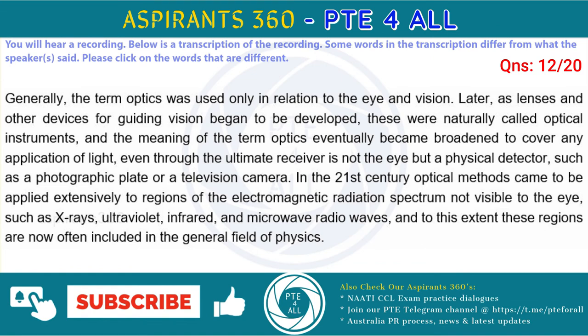Originally, the term optics was used only in relation to the eye and vision. Later, as lenses and other devices for aiding vision began to be developed, these were naturally called optical instruments, and the meaning of the term optics eventually became broadened to cover any application of light, even though the ultimate receiver is not the eye but a physical detector, such as a photographic plate or a television camera. In the 20th century optical methods came to be applied extensively to regions of the electromagnetic radiation spectrum not visible to the eye, such as X-rays, ultraviolet, infrared, and microwave radio waves, and to this extent these regions are now often included in the general field of optics.